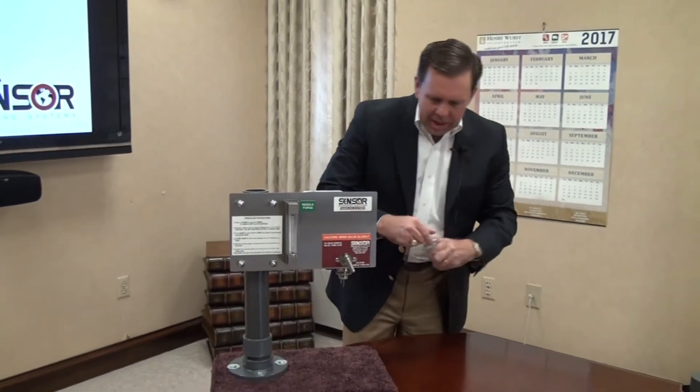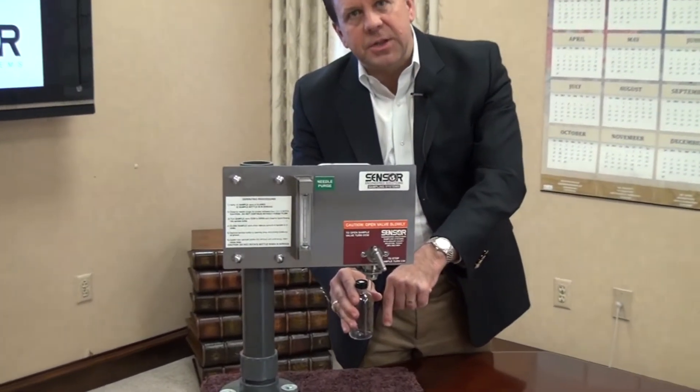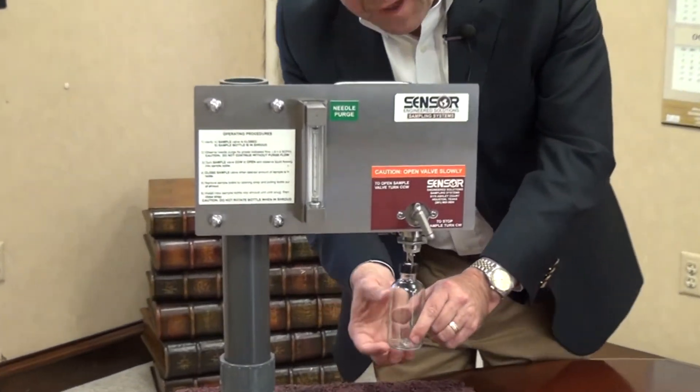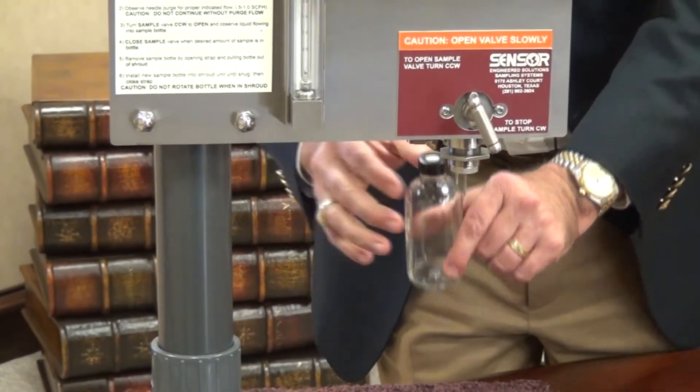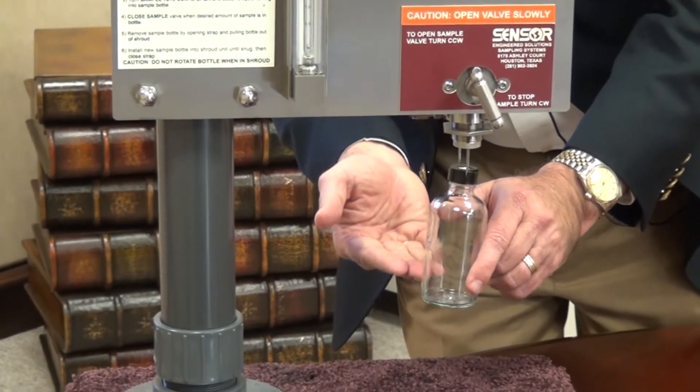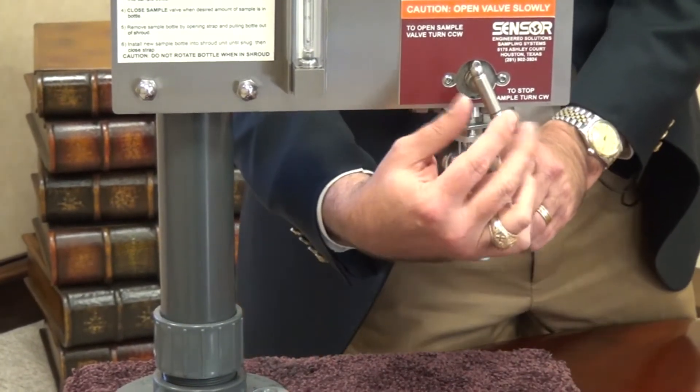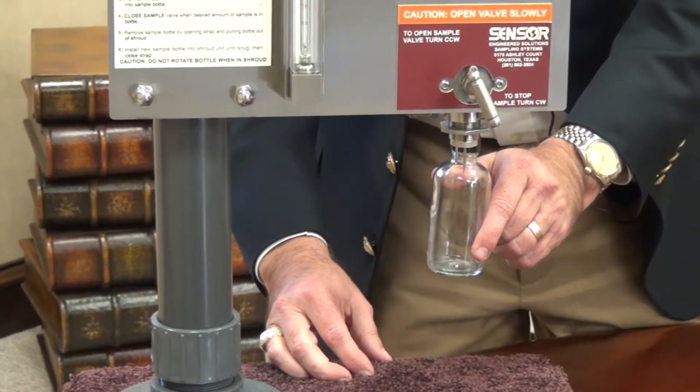As the bottle is installed, through the process needle the sample is injected. The vapors inside the bottle escape through the vent needle, and the operator will have visual indication looking through the bottle and will manually control the sampling process. Now let's take a look at how that system works.